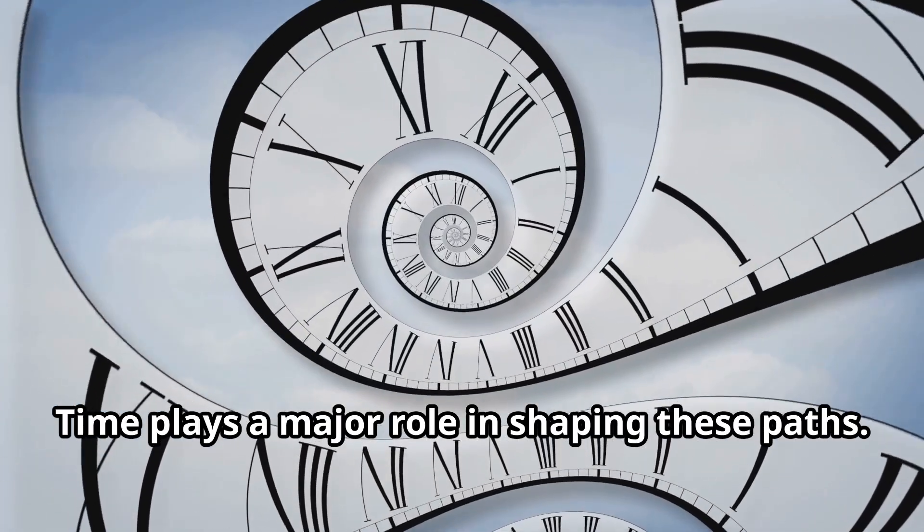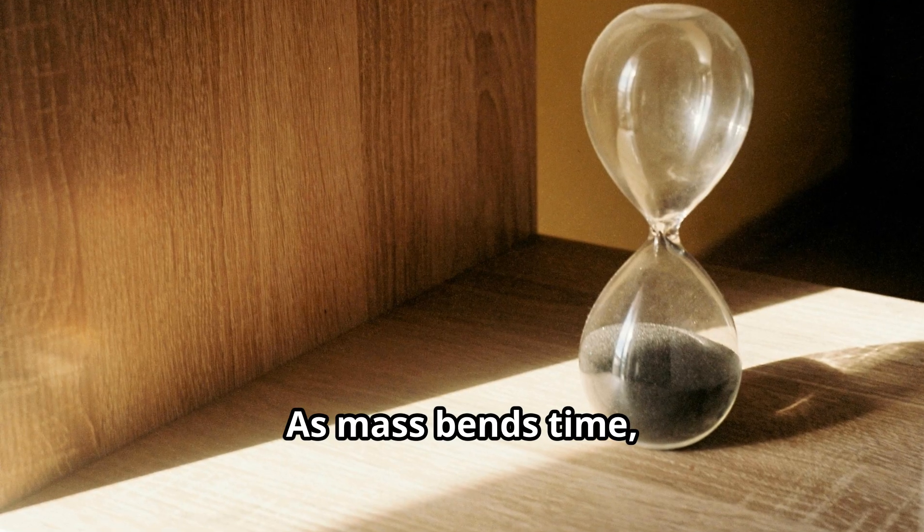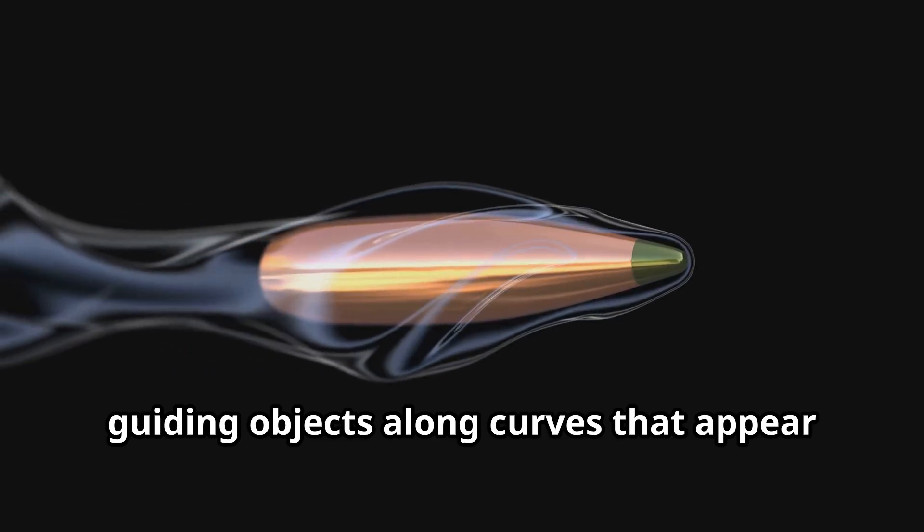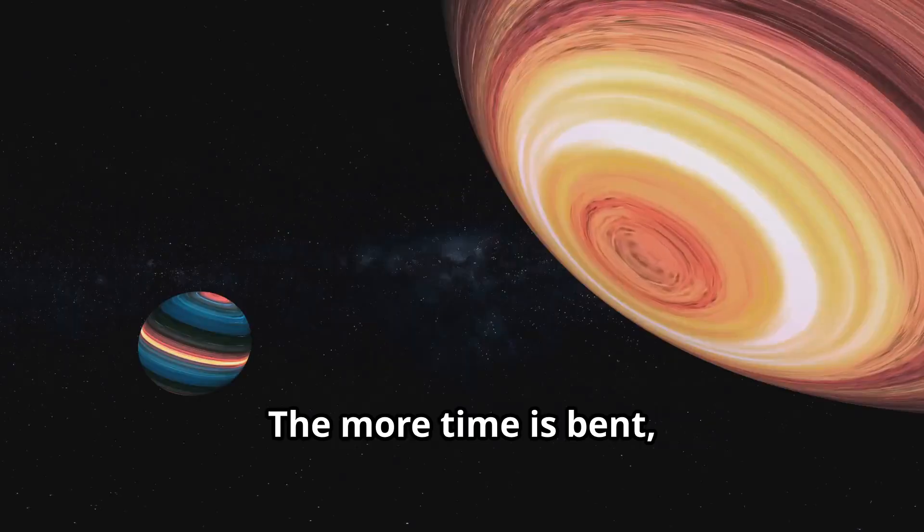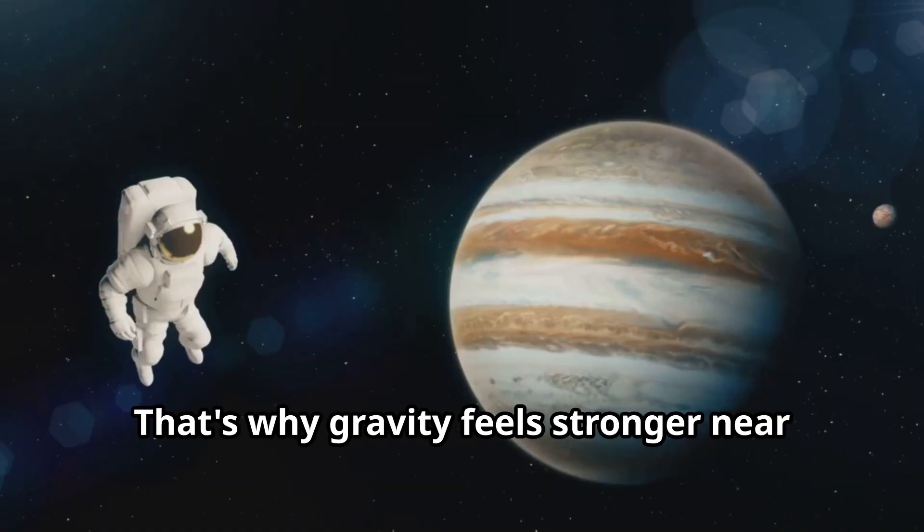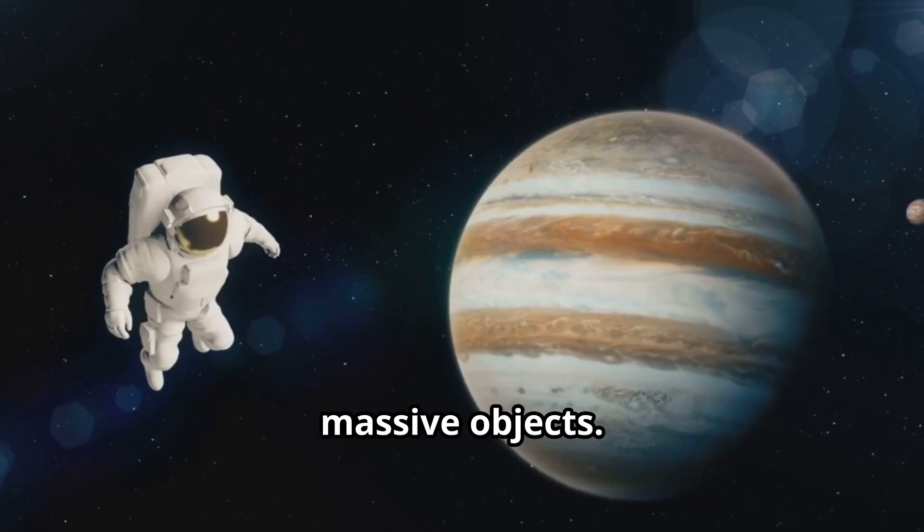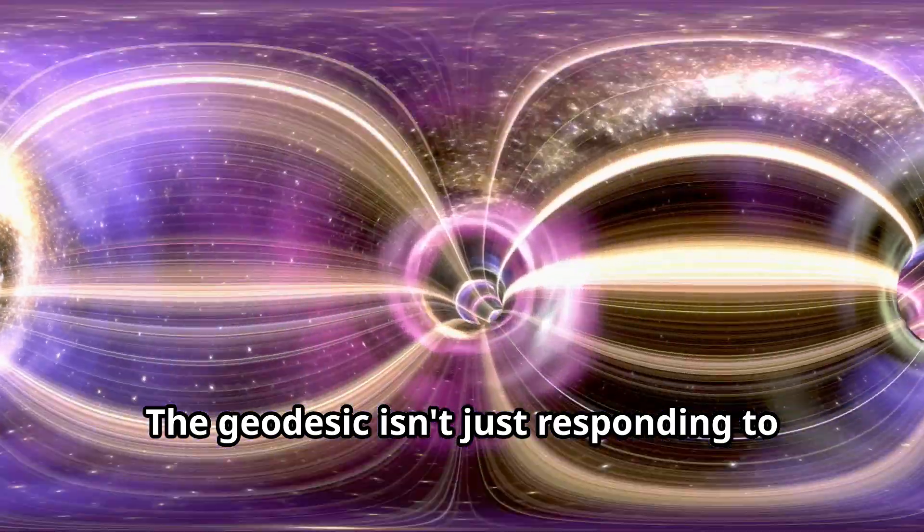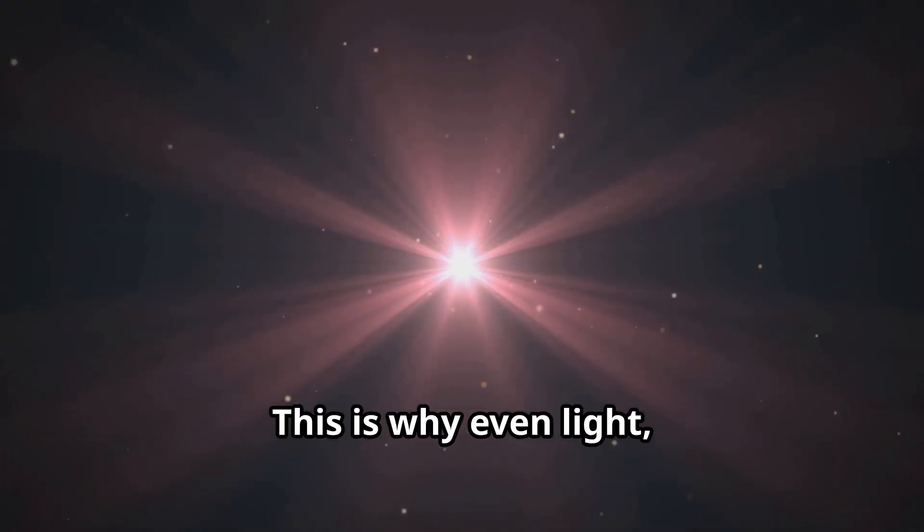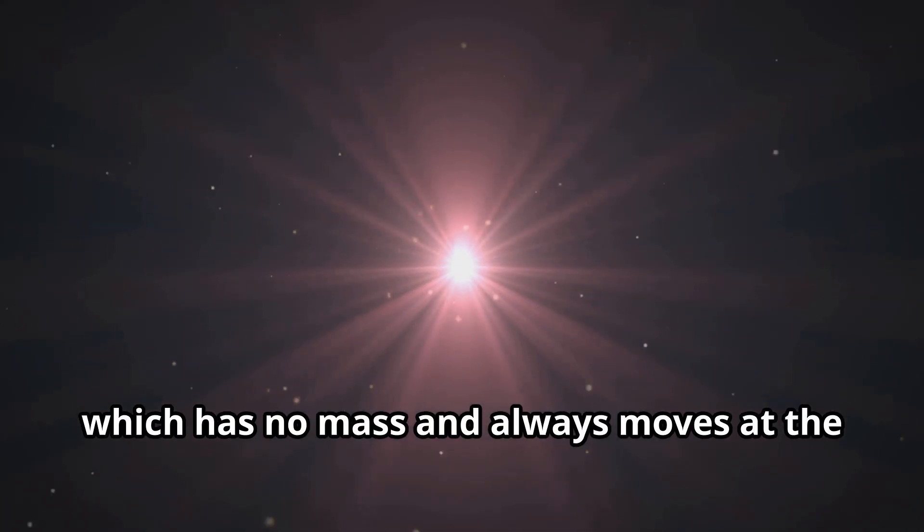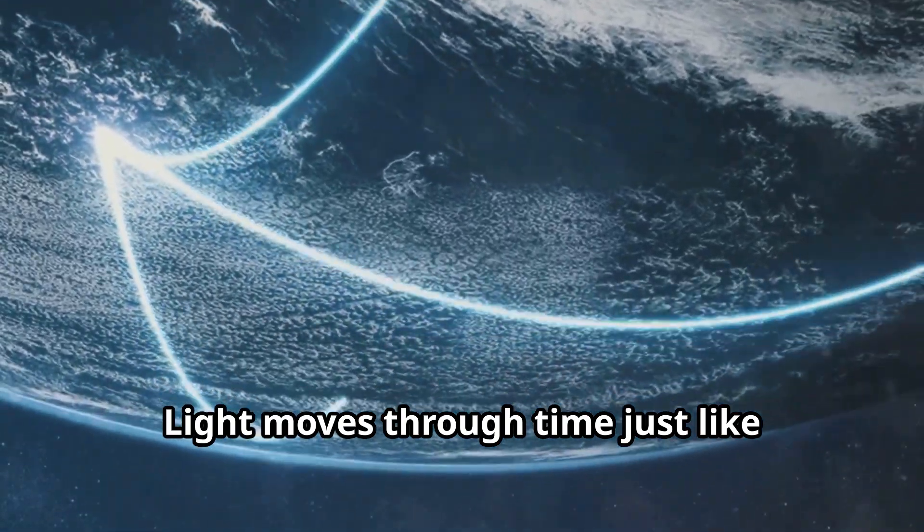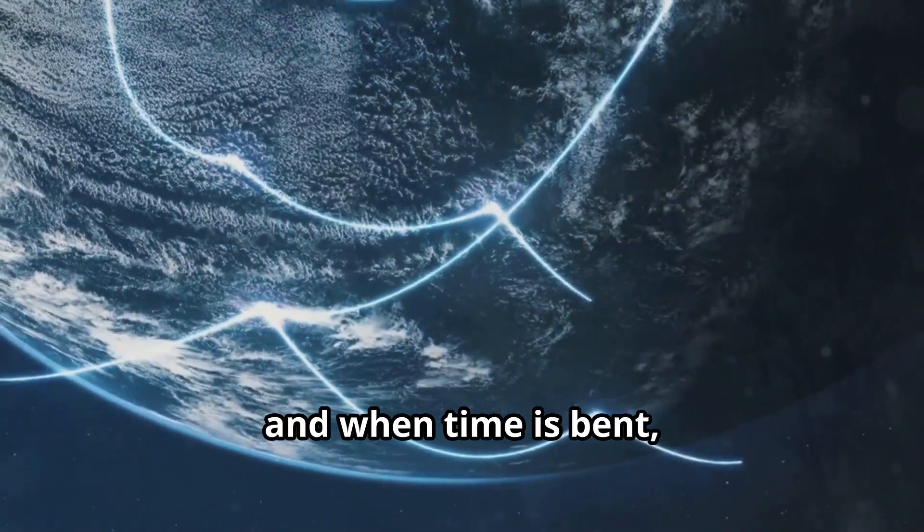Time plays a major role in shaping these paths. As mass bends time, the geodesic bends as well, guiding objects along curves that appear as acceleration or attraction. The more time is bent, the more sharply the geodesic curves. That's why gravity feels stronger near massive objects. The geodesic isn't just responding to bent space, it's reacting to bent time. This is why even light, which has no mass and always moves at the same speed, follows curved paths near stars. Light moves through time, just like everything else, and when time is bent, its path bends too.